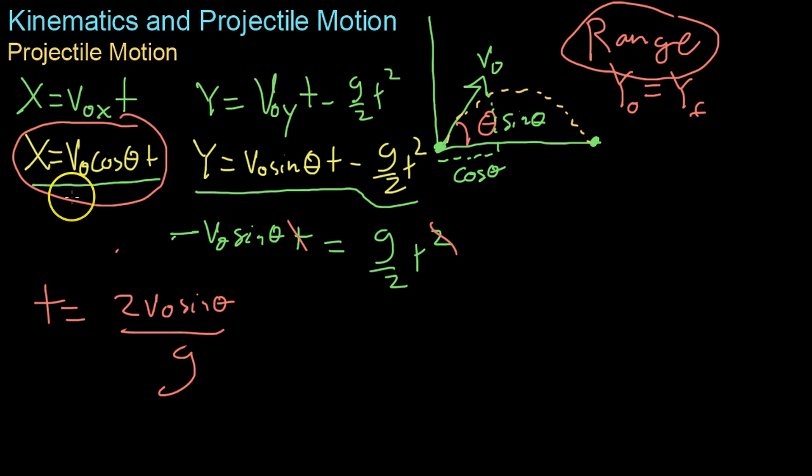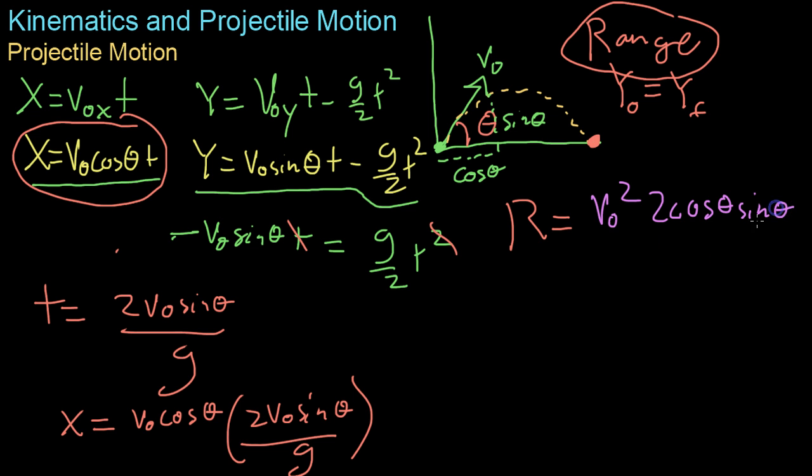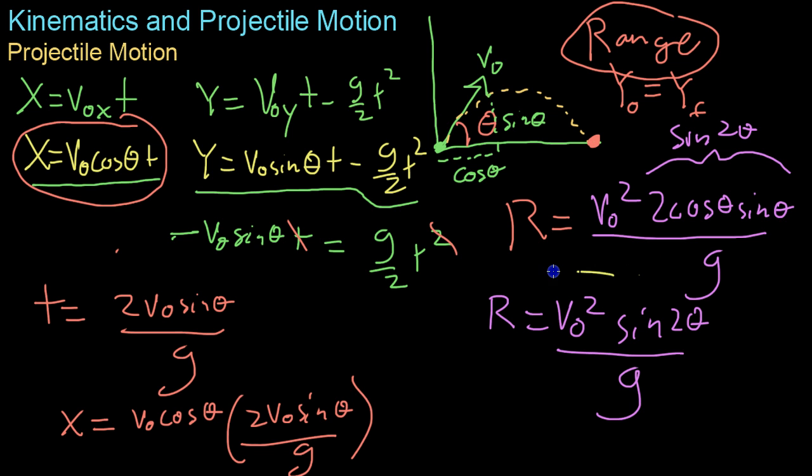From there it's just a matter of plugging that time term into your X equation to get basically where the particle will be along the X axis at the time when it hits the ground over here. So, you get X equals V0 cosine theta times 2 V0 sine theta all over G. Multiplying this out you get that we'll refer to this as R now because this is the maximum range. R equals V0 squared 2 cosine theta sine theta all over G but we know from trigonometry that 2 sine theta cosine theta is equal to sine of 2 theta so really range is equal to V0 squared sine 2 theta all over G.